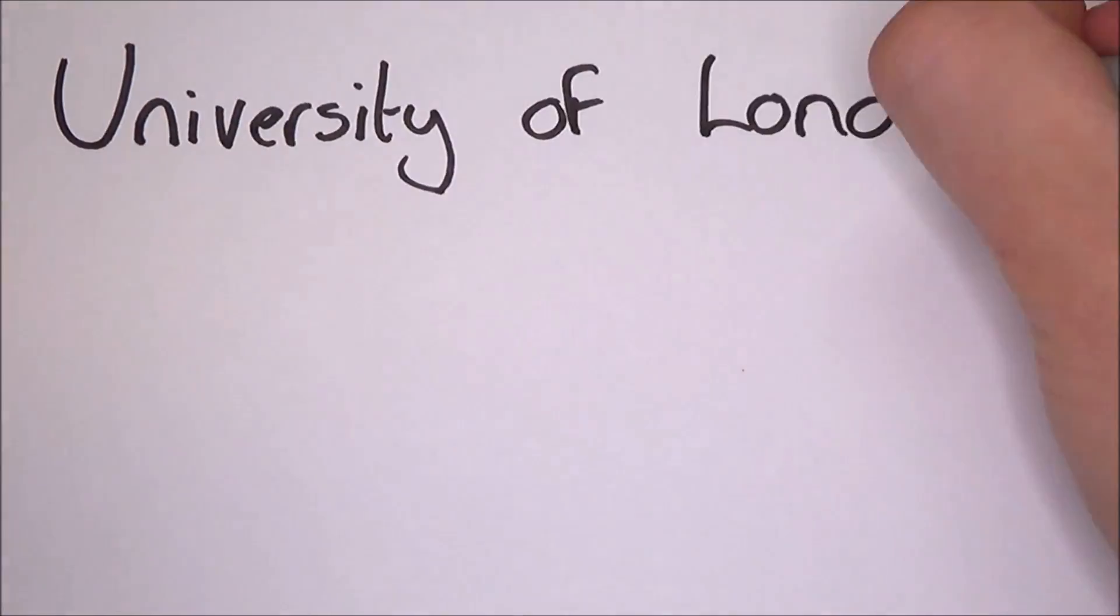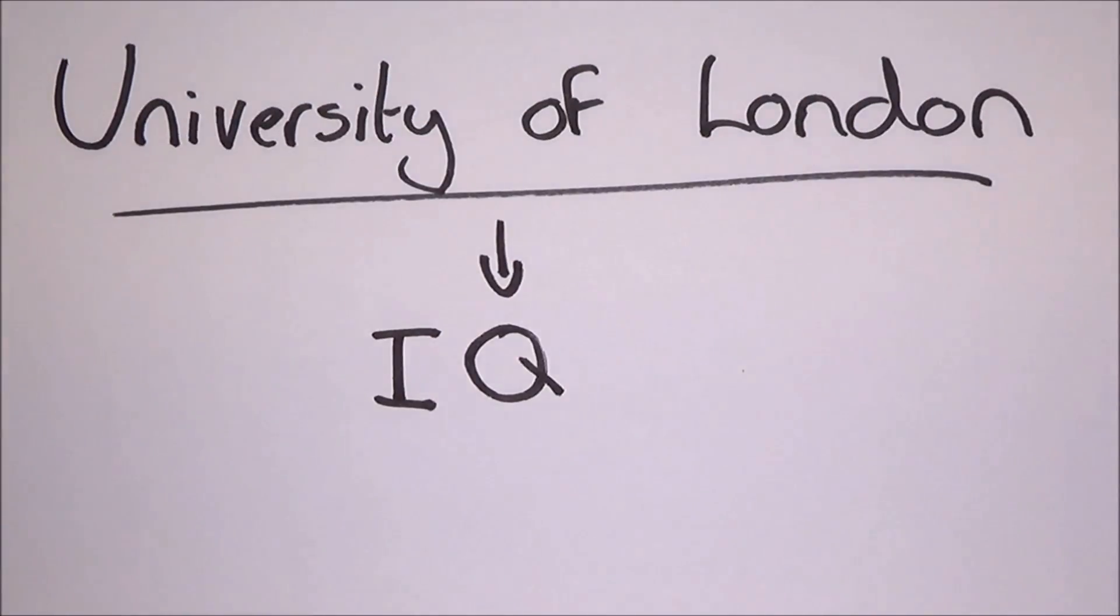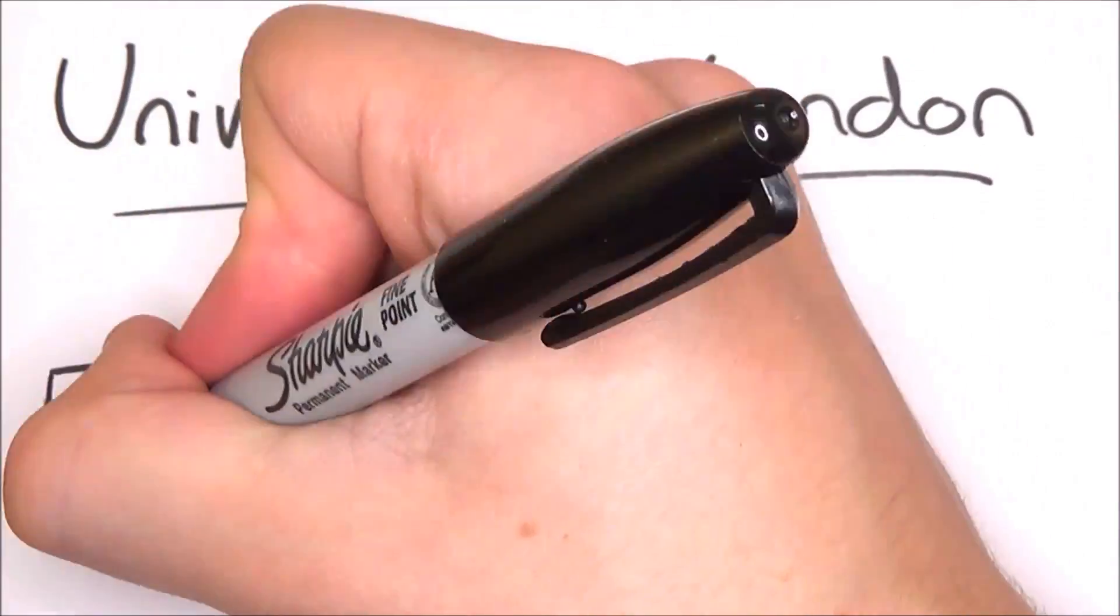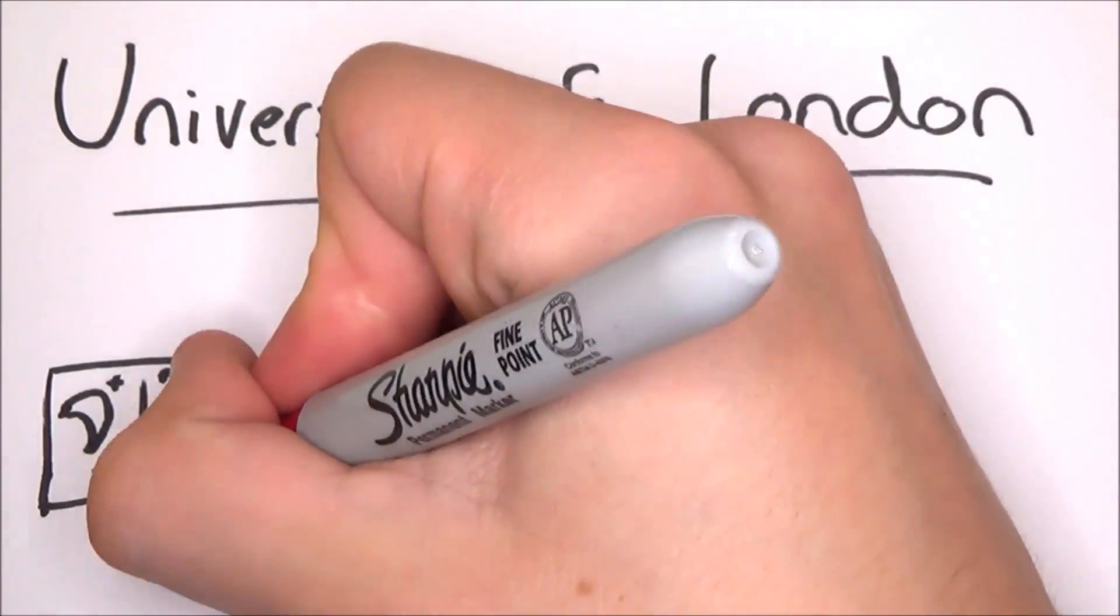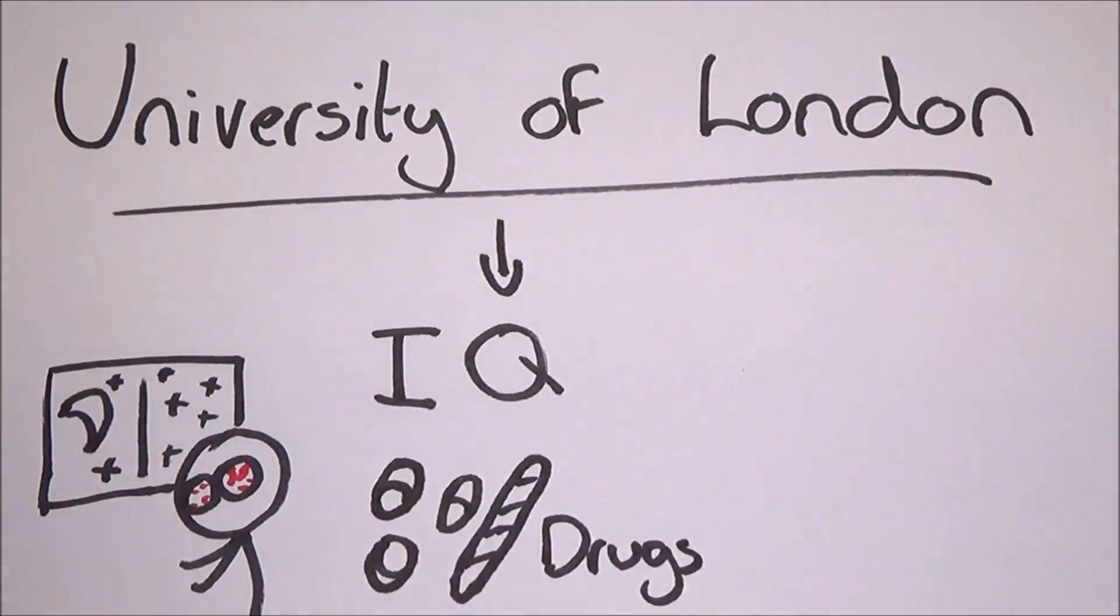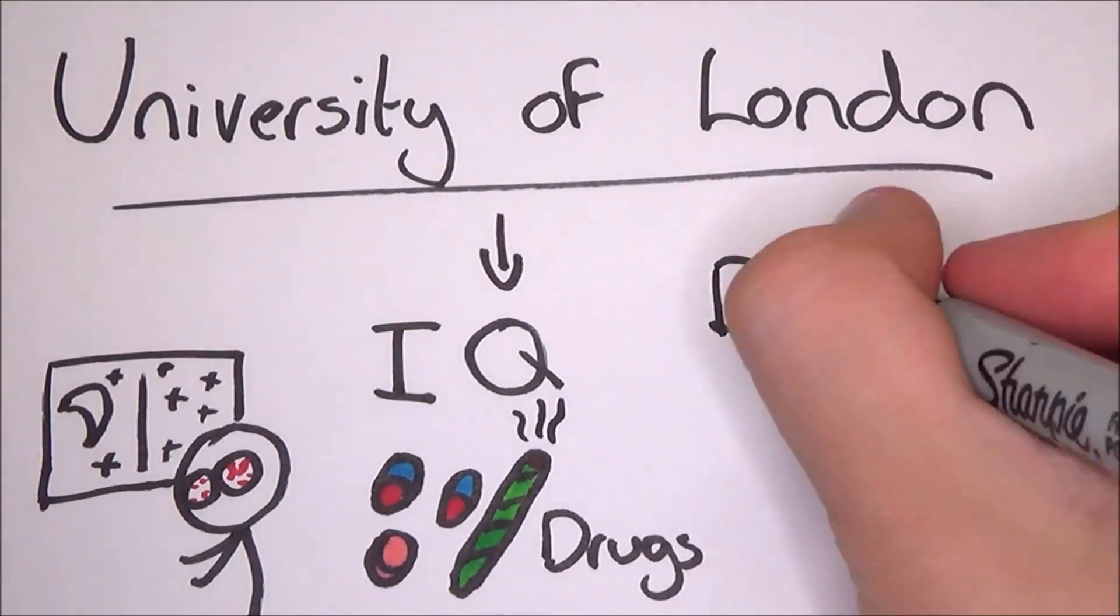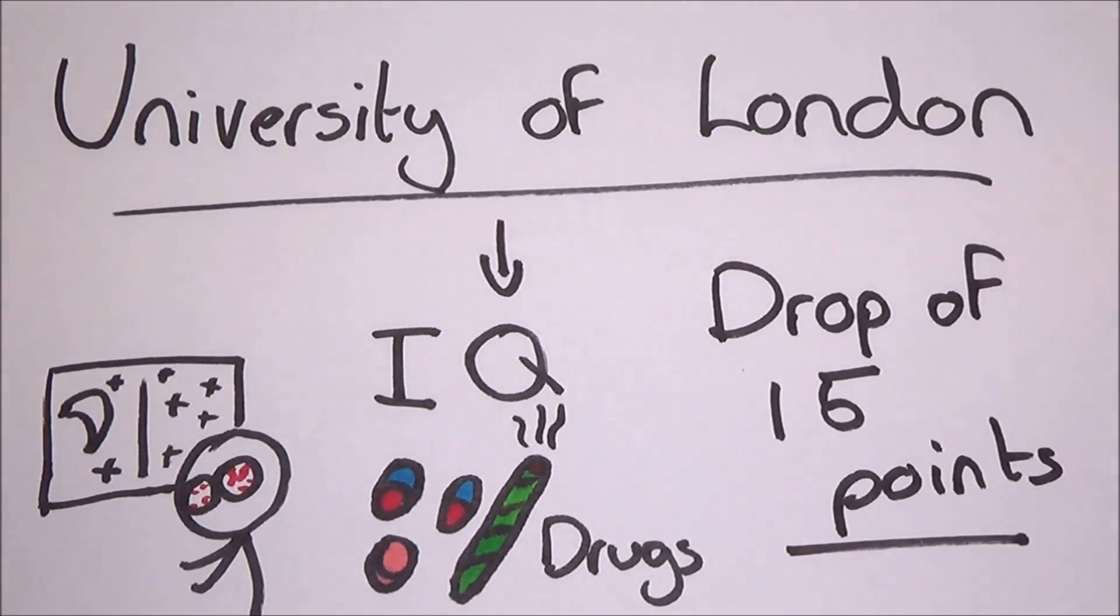The University of London then jumped on the bandwagon with a study about multitasking and your IQ. It showed that people who are multitasking had the same effect as someone who was staying up all night or was high on drugs when doing their work. Then they showed it can result in an IQ drop by up to 15 points, and some of the participants even lowered their IQ to that of an average eight-year-old.